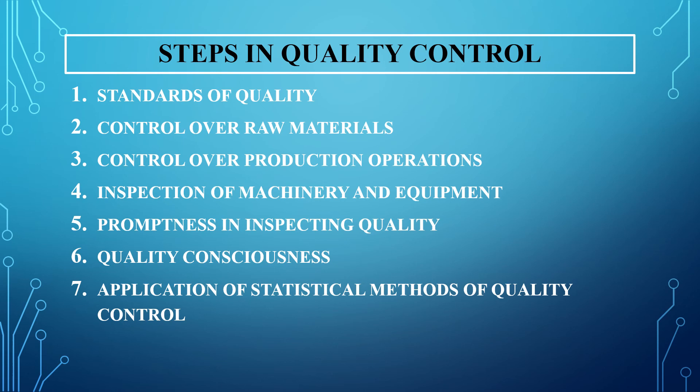For a quick revision: first, standards of quality; second, control over raw materials; third, control over production operations; fourth, inspection of machinery and equipment; fifth, promptness in inspecting quality; sixth, quality consciousness; seventh, application of statistical methods of quality control.